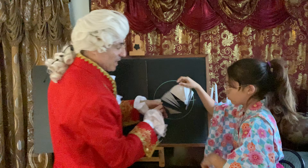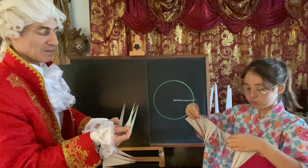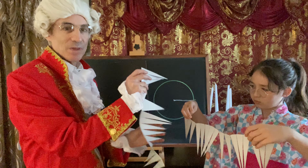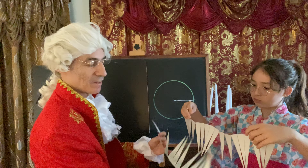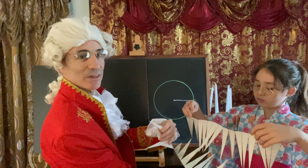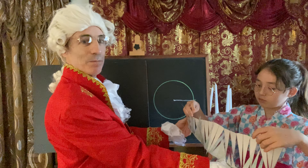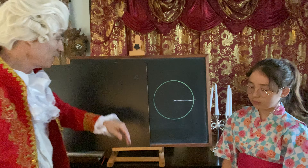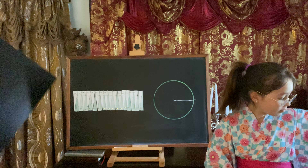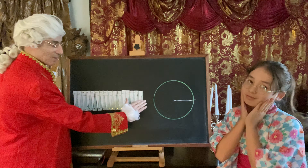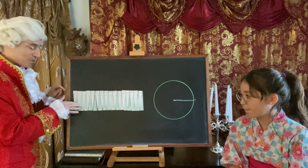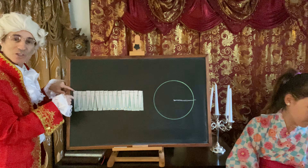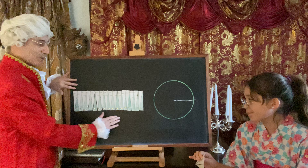Then we could open those slices and fit them together and maybe make a rectangle there. But let's see what it would really look like. We glued it on. Look at that — almost a perfect rectangle. We could keep making smaller slices until it was a perfect rectangle.